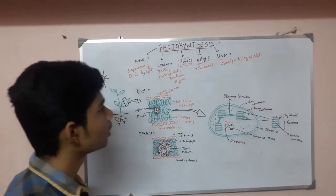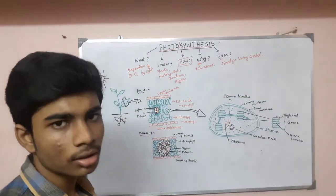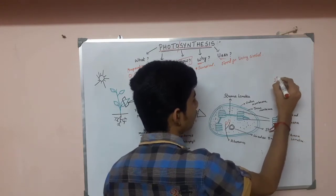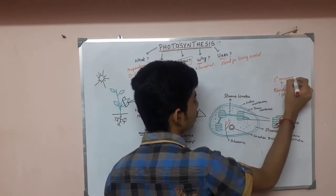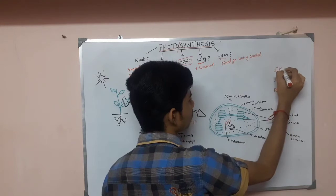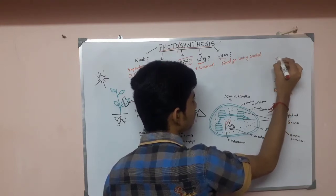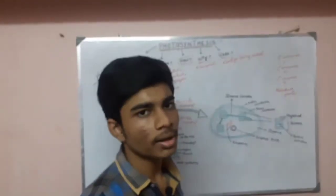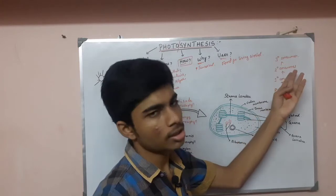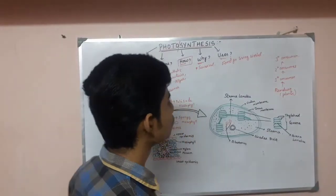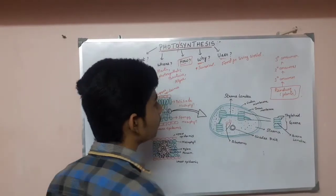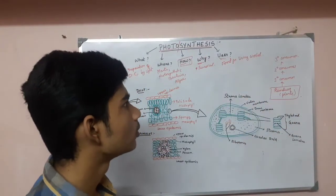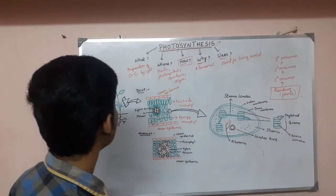This is the food for the living world — without this photosynthesis, life cannot exist. For example, let's take producers, that is plants, then primary consumers, secondary consumers, and tertiary consumers. Without photosynthesis, plants cannot survive. So without plants there are no primary consumers, without primary consumers there are no secondary consumers, and without secondary consumers there are no tertiary consumers. So plants play a very important role in daily life.